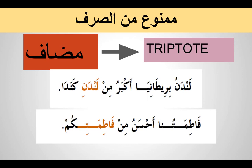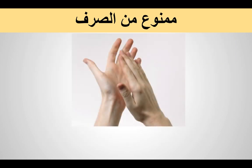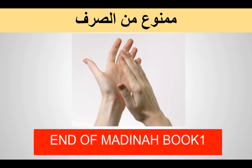That's the lesson on Mamnu' min al-Sarf: a noun in its natural state takes tanwin, whereas a diptote — mamnu' min al-sarf — does not take tanwin and does not take kasra if it is alone. However, if al is attached to it, or if it is acting as a mudaf, then it can take kasra. This brings us to the end of Book One — so it's time to rejoice! From next lesson onwards, we will be starting Book Two, insha'Allah, and we will be learning more and more in detail. Assalamu alaikum wa rahmatullahi wa barakatuhu.